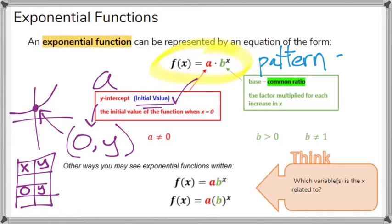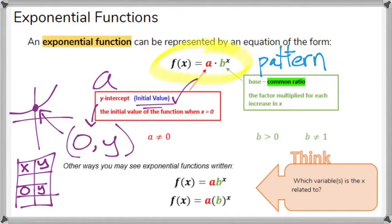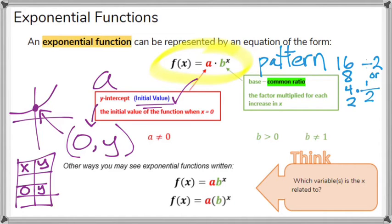All of your y-values are being multiplied by 2, so 2 would be the value of b. Another example would be if you saw 3, 9, 27 — this pattern is multiplying by 3, and that would be the value of b. And don't think that the numbers just have to get bigger. They could get smaller — if you had 16, 8, 4, 2, that means your pattern is dividing by 2, or in terms of multiplication, you are multiplying by one half. That would be the correct way to represent that pattern.